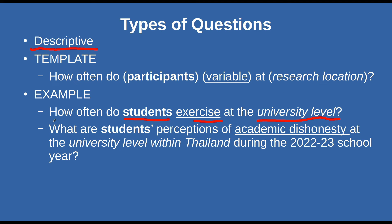Here's a second, cleaner example: 'What are students' — our participants — 'perceptions of academic dishonesty?' — our variable — 'at the university level within Thailand during the 2022-2023 school year?' — our location and time limit. This is very clear: I'm looking at what students think about academic dishonesty over one academic year. With this one, it all depends on how I measure perception — I can use Likert scales, I can use categories, or I can do a count. Things are shaped up so that I can have success in how I collect and analyze data.